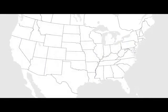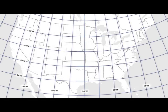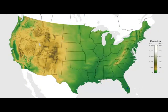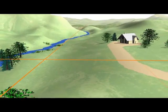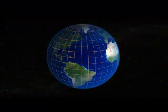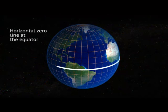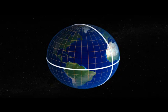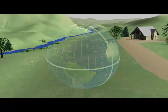For many decades, we have had two types of nationwide datums in the United States: horizontal and vertical, and they were generally separate from one another. Horizontal datums allow us to measure distances and directions across the surface of the Earth. Most horizontal datums define a zero line at the equator, from which we measure north and south, and there is also a zero line at the Greenwich Meridian, from which we measure east and west.